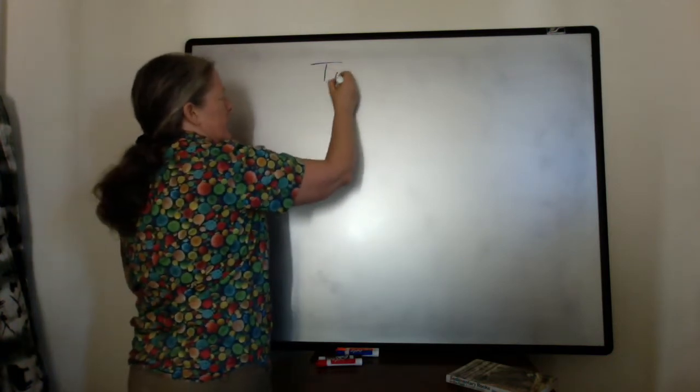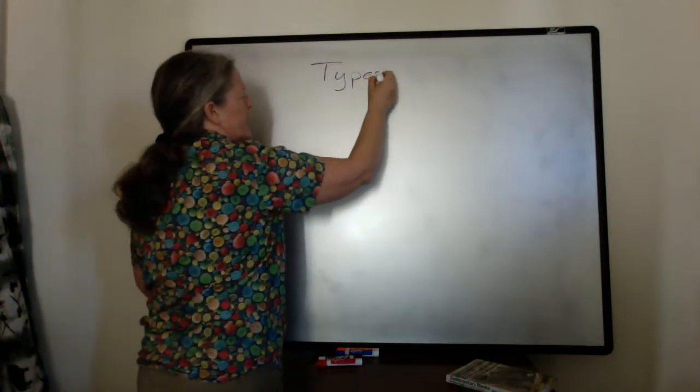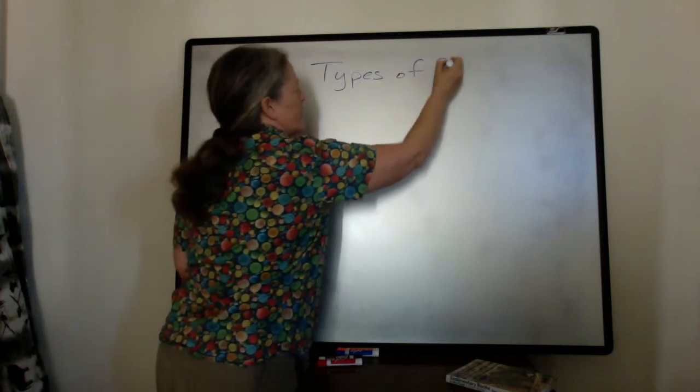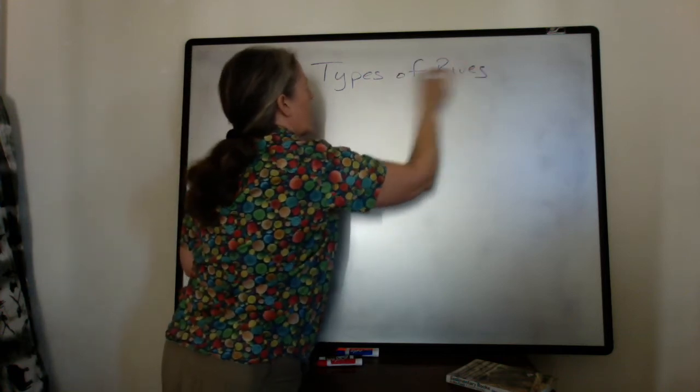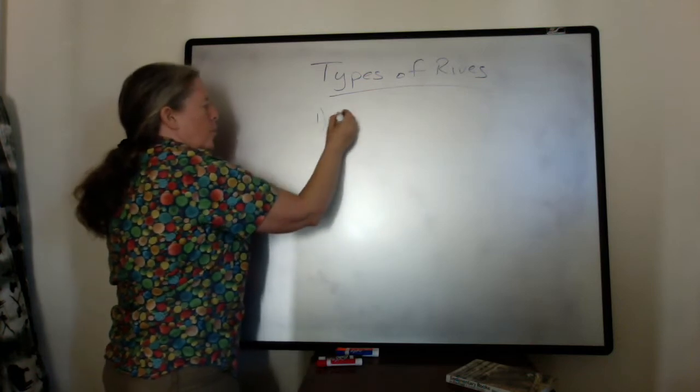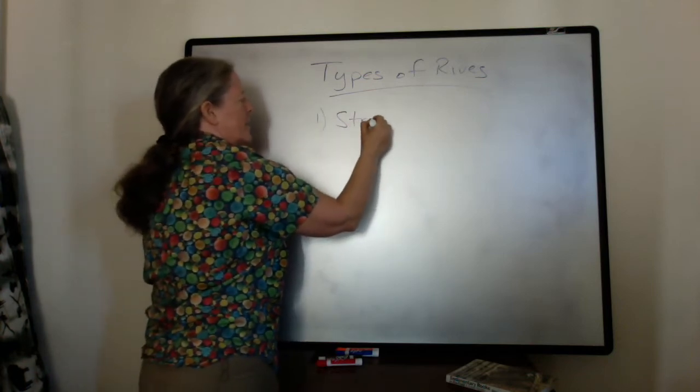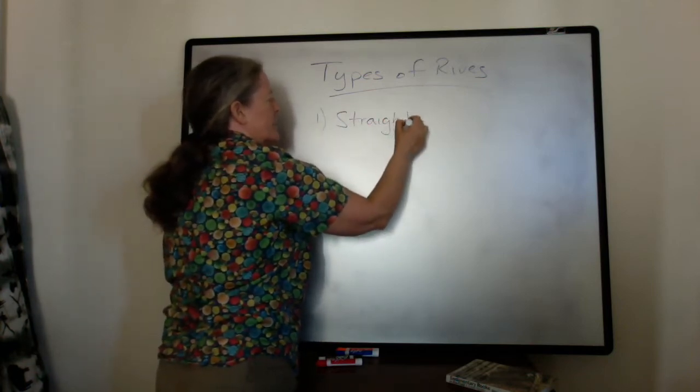There are several different geometries or types of rivers. One that's quite rare is a straight channel.